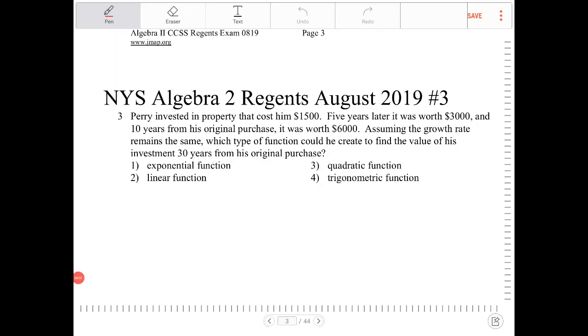Perry invested in property that cost him $1,500. Five years later, it was worth $3,000. Ten years from his original purchase, it was worth $6,000.